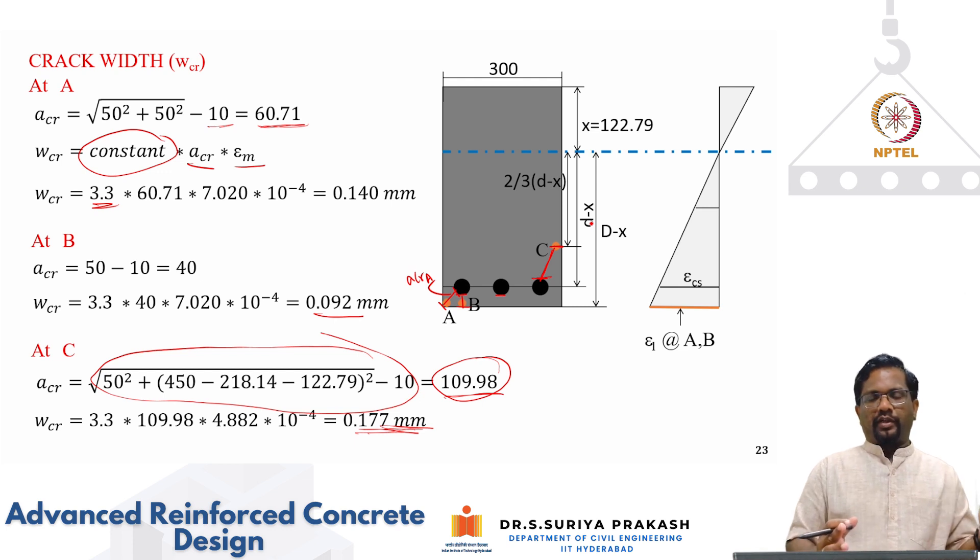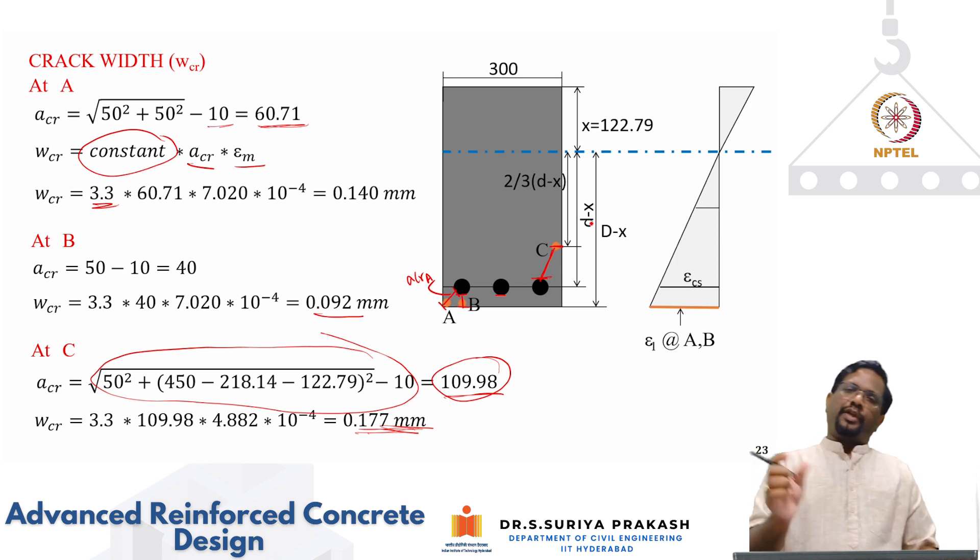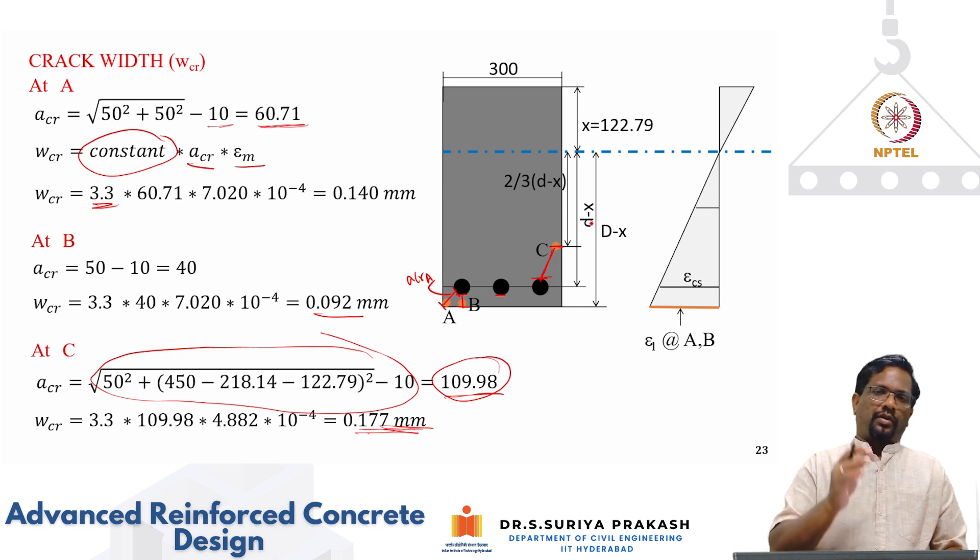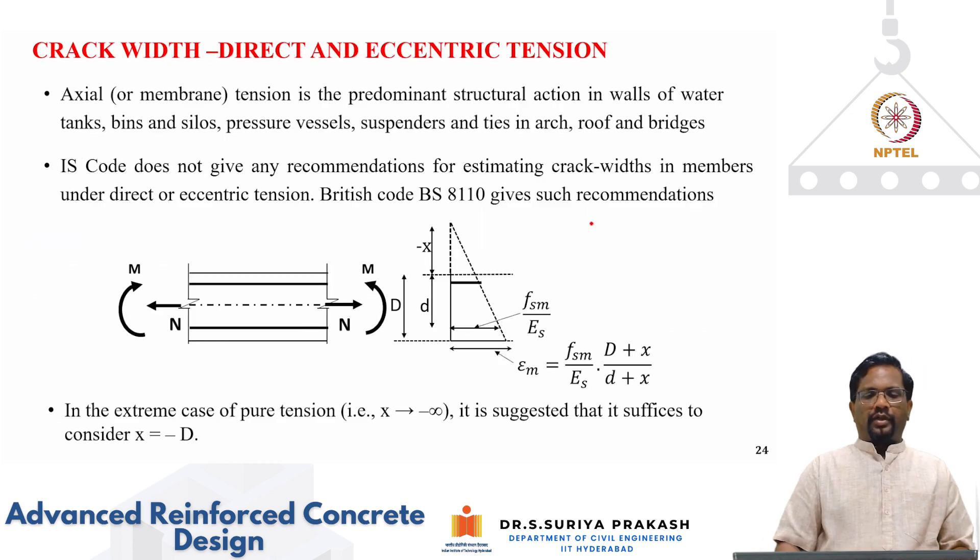These are the ways that we can calculate. What did we do? We did first calculate the neutral axis depth by converting into a cracked section and then we calculate the cracked strain, strain considering the cracked section epsilon 1. Then that epsilon 1 has to be reduced by some magnitude epsilon 2 by assuming some stress contribution of concrete in tension that is epsilon 2. Then when you do that epsilon 1 minus epsilon 2 for all the 3 points, you get mean tensile strain. Crack width is constant multiplied by ACR multiplied by epsilon M. Epsilon M we have calculated ACR is basically a geometry depending upon which point that you are considering. You can consider the distance ACR. Then you multiply by a proportional factor which is 3.3 for deformed bars. In this way, we have calculated the cracks.